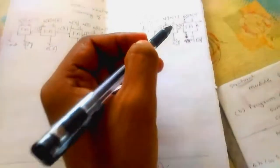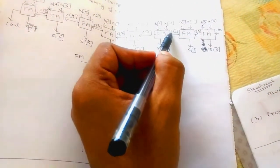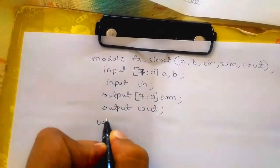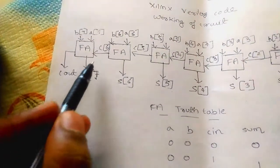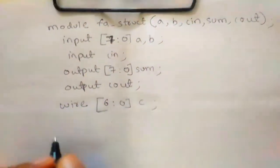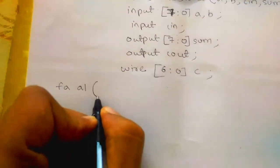Next output. Output is also 8 bits, that's why 7 down to 0 sum. Then output cout. Now we are calling. I am using wires like c0, c1, c2. Wire 6 down to 0 c.